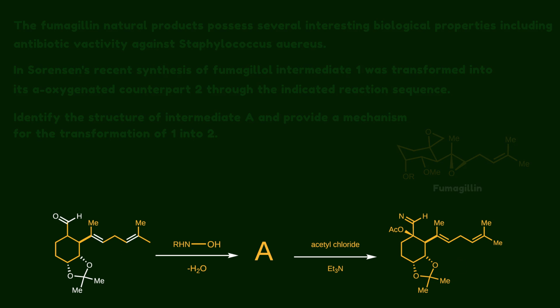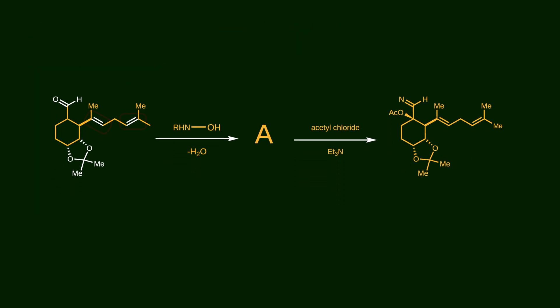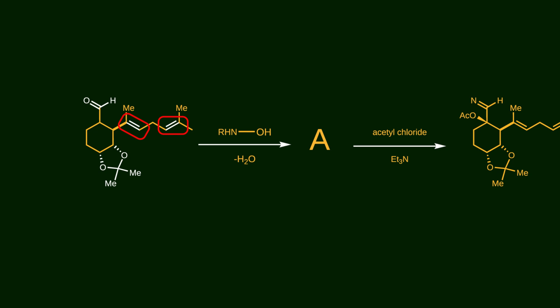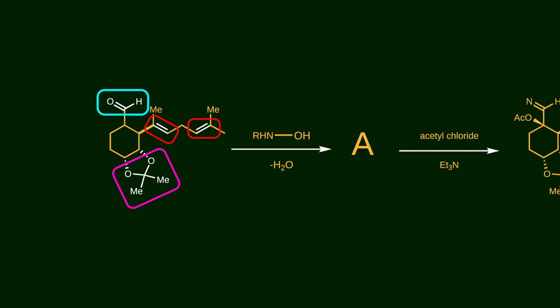Now let's find active sites in compound 1. As you see, there are two alkenes, one acetal and an aldehyde group which can be attacked by nucleophile.